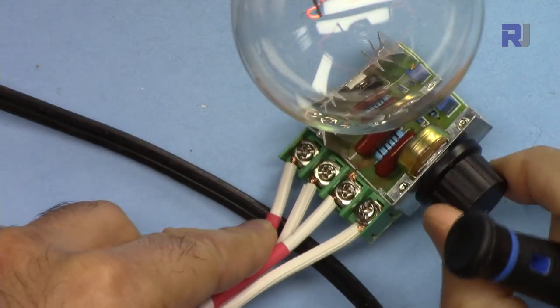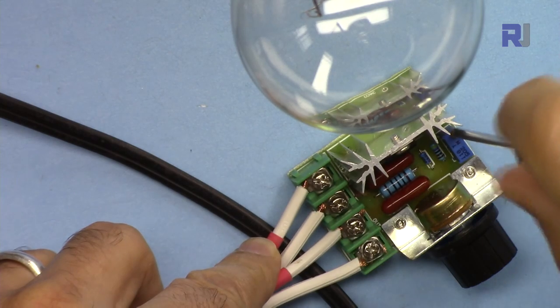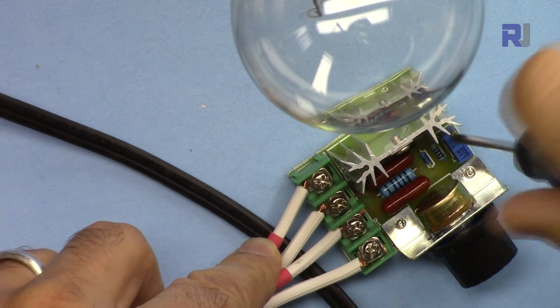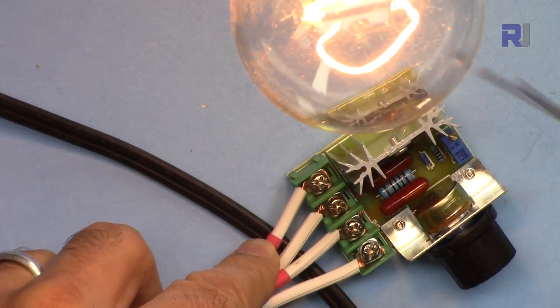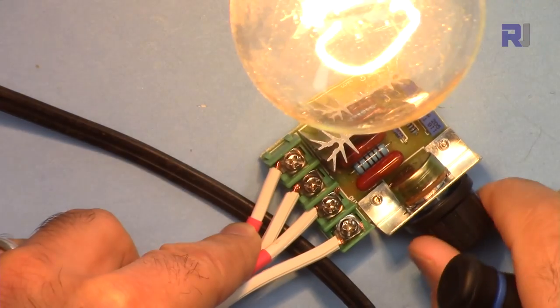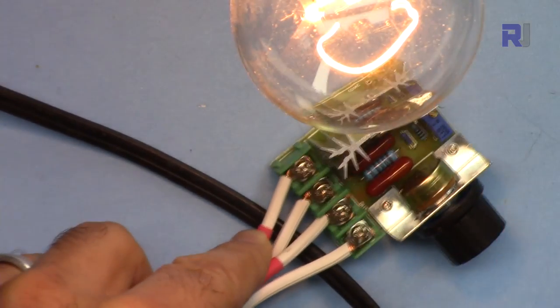So the light was like this. I could increase the brightness, and when I was decreasing it, it was at this level.